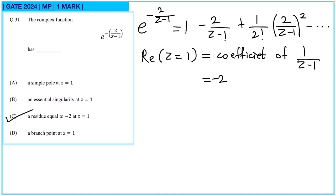All other (z−1) terms are present — (z−1), (z−1) squared, (z−1) cubed, and so on — so it is an essential singularity. So option B is correct.